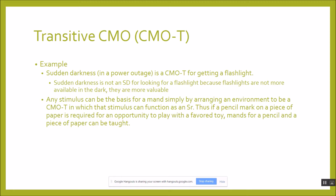A real-life example: if the power goes out in a storm and there's sudden darkness, that's a CMOT for getting a flashlight. The sudden darkness is not an SD for looking for a flashlight because flashlights are not more available in the dark — they are more valuable in the dark. That's why it would be a CMOT and not an SD. Any stimulus that can be the basis for a mand by arranging the environment is also a CMOT. If a pencil mark on a piece of paper is required for an opportunity to play with a favorite toy, then mands for pencils and paper can be taught — not because it's an SD, but because it's a CMOT.